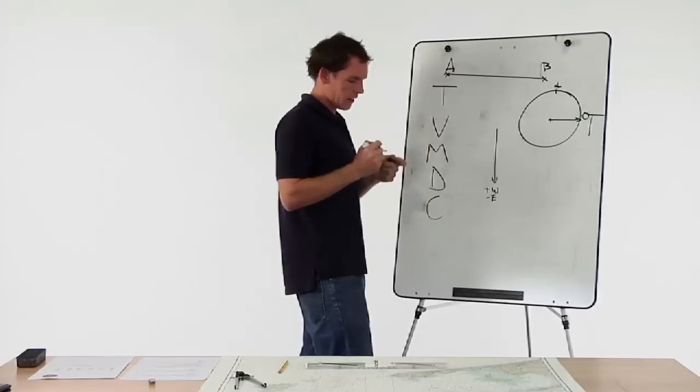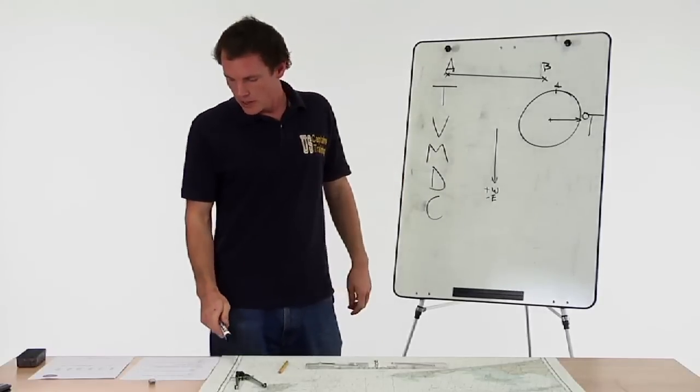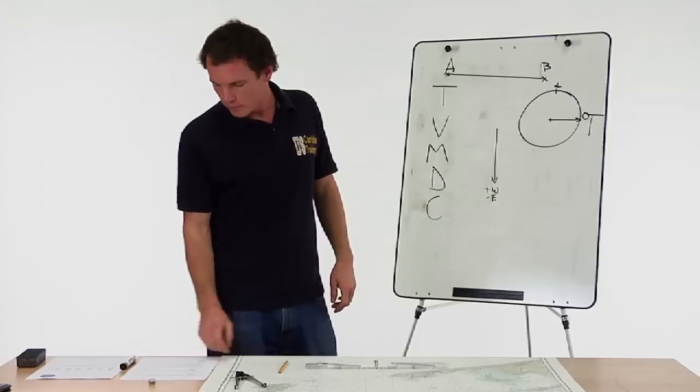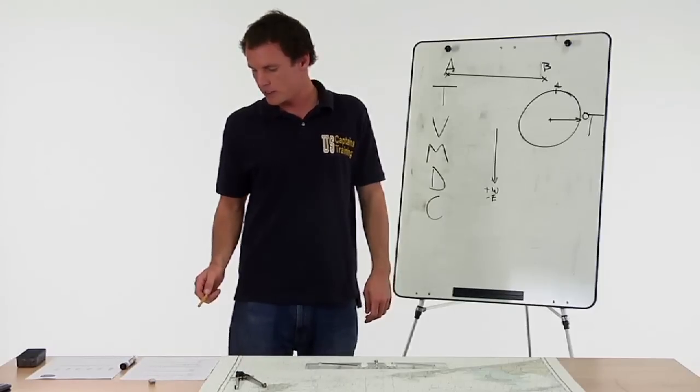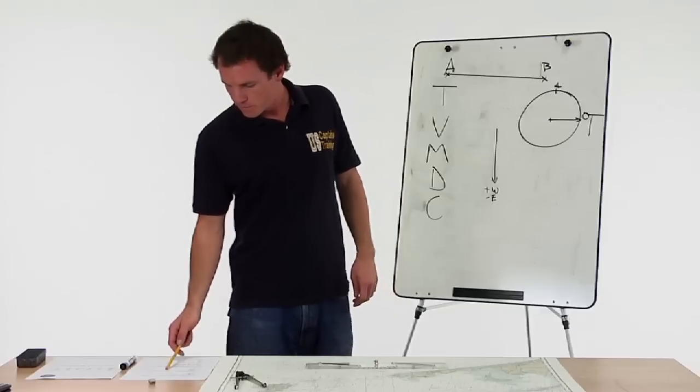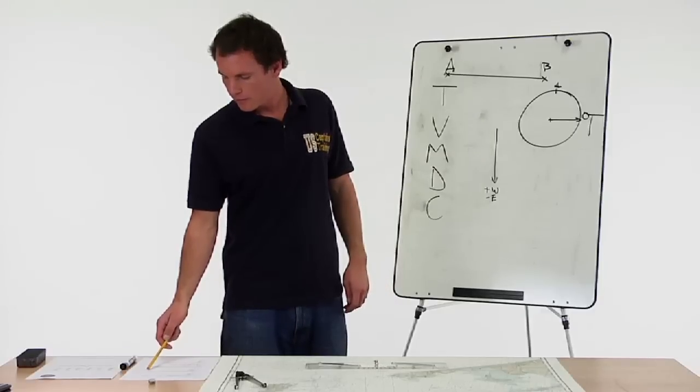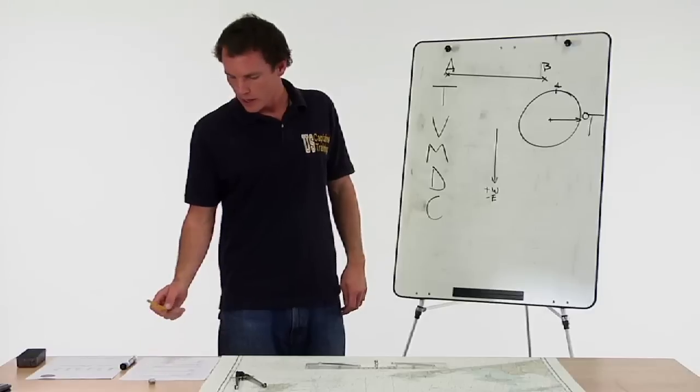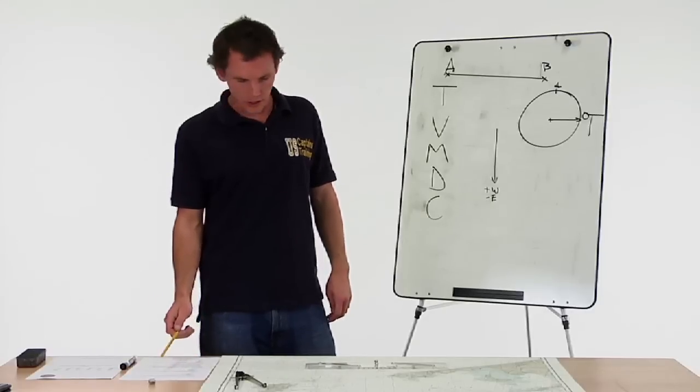So let's look at the chart and the problem. The problem states: you're three miles due east of Montauk point light. What is the course per standard magnetic compass to latitude 41 north even, longitude 71 40.0 west? So we find our starting point, three miles due east of Montauk point light.